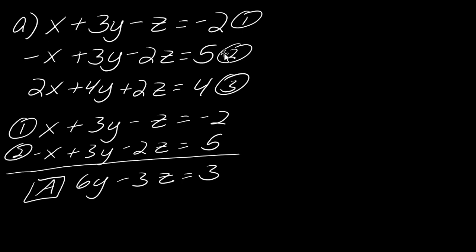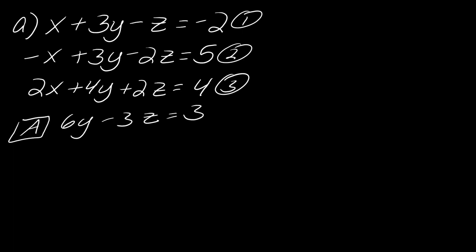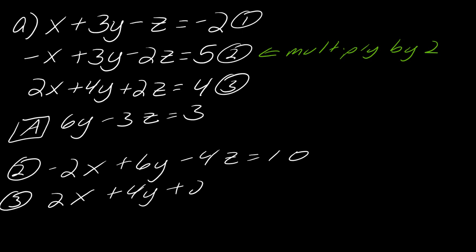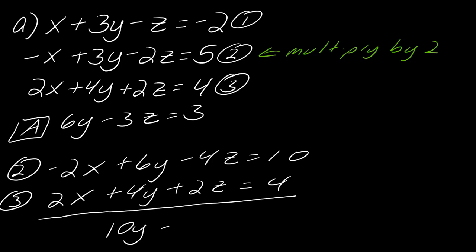Going forward, I'll use equation 2 to eliminate the x out of equation 3, because you have to eliminate the same variable up to two times. To effectively eliminate my x's, I'm going to need to multiply the second equation by two. So this becomes negative 2x plus 6y minus 4z equals 10. Then I write down the third equation: 2x plus 4y plus 2z equals 4. Adding straight down, the x's drop out and I'm left with 10y minus 2z equals 14.